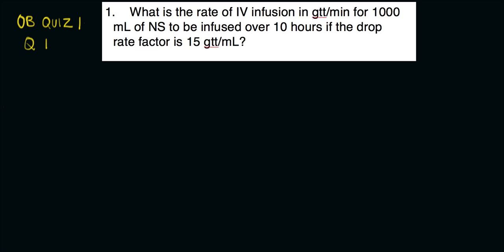The question is asking you to figure out the drops per minute. The IV bag is 1000 ml of normal saline to be infused over 10 hours and the tubing that you have on hand is 15 GTTs per ml. So let's go ahead and set this up.